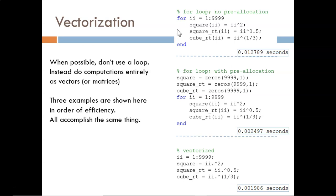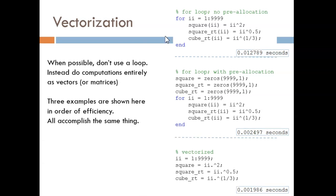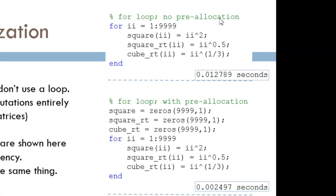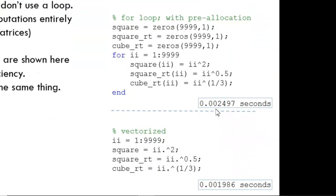These three examples all create the same final vectors in increasing order of efficiency. Up top, we have a for loop with no pre-allocation. In the middle, by simply pre-allocating, we reduce the time six-fold. Lastly, by eliminating the for loops altogether and instead using element-by-element operations, we reduce the time a bit more, about a 25% improvement relative to the middle example.